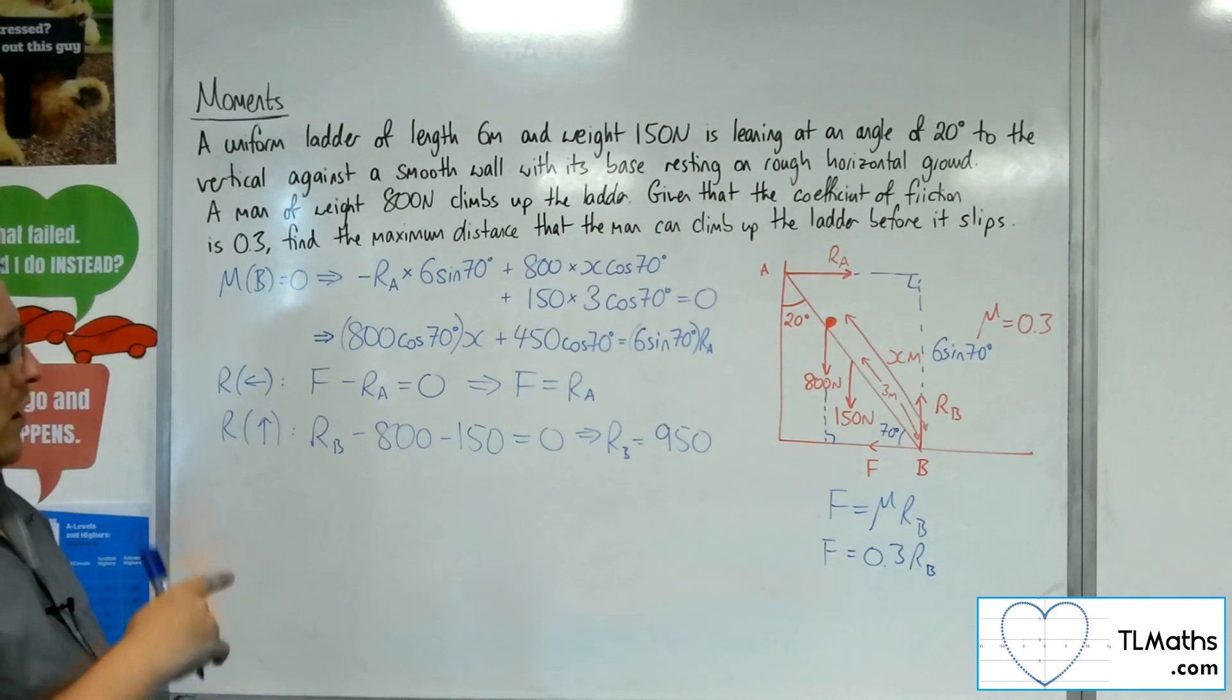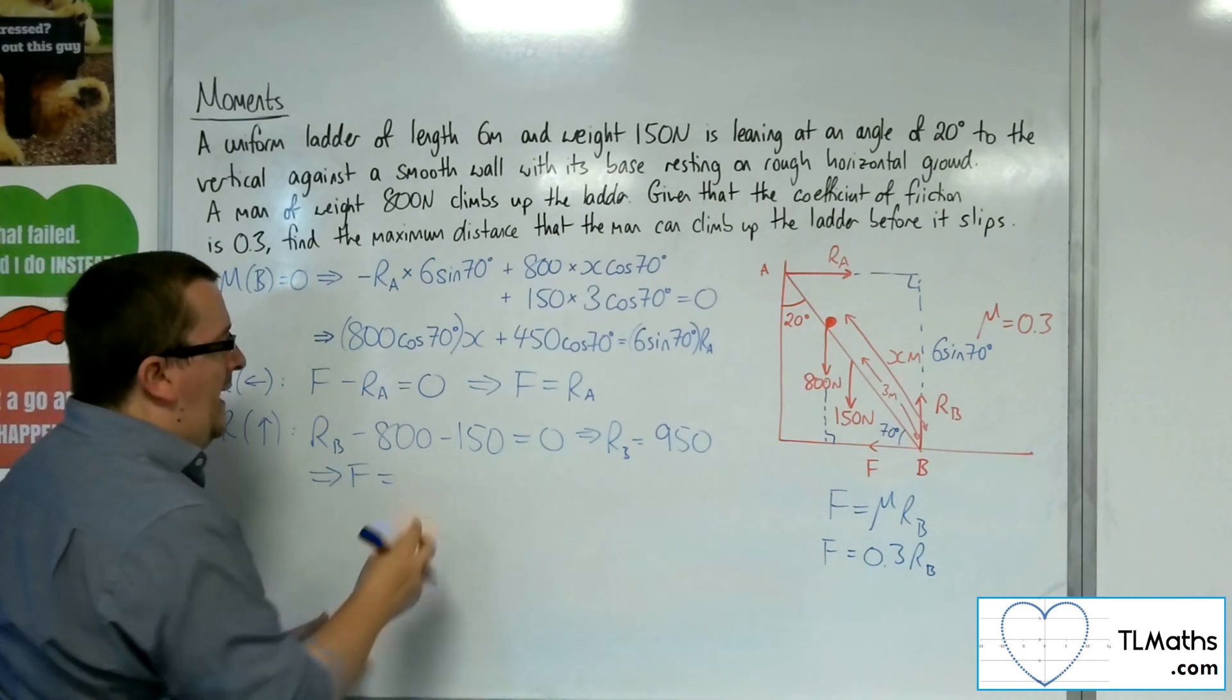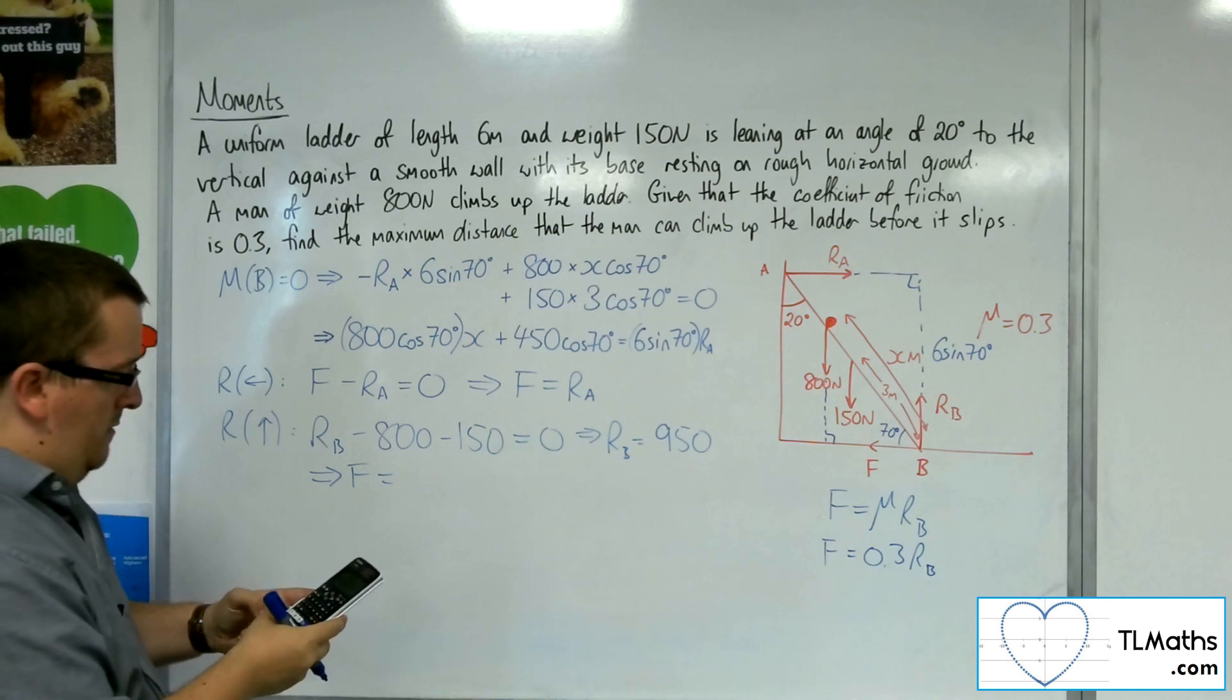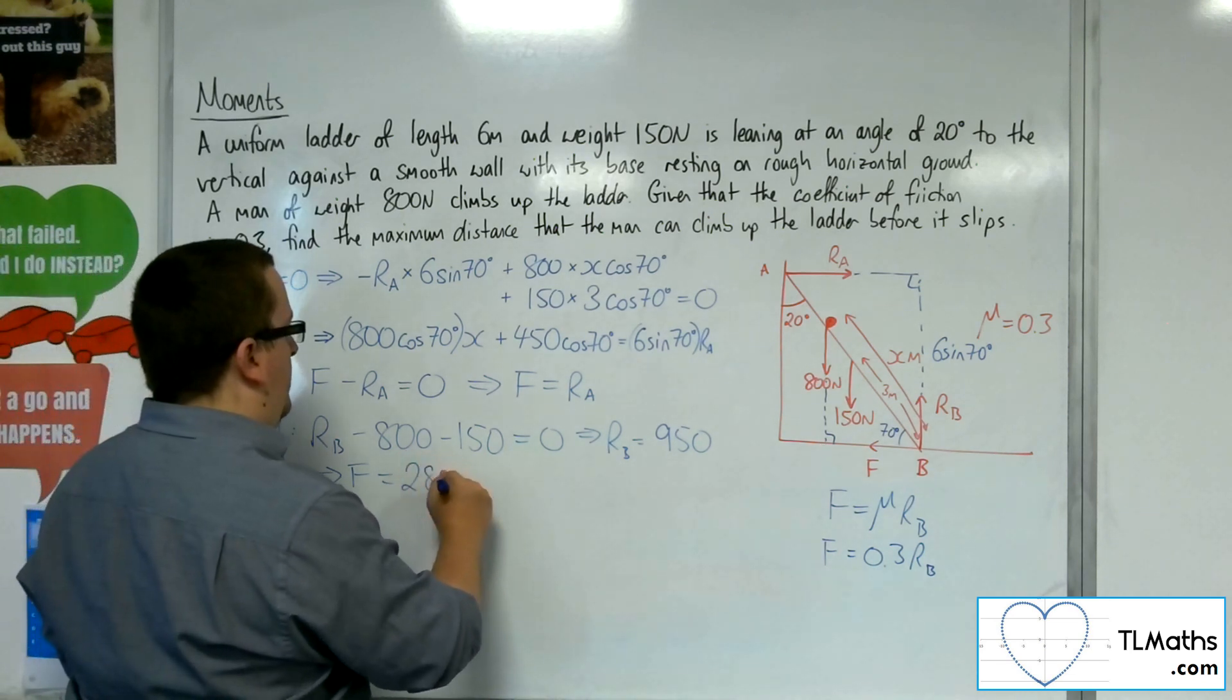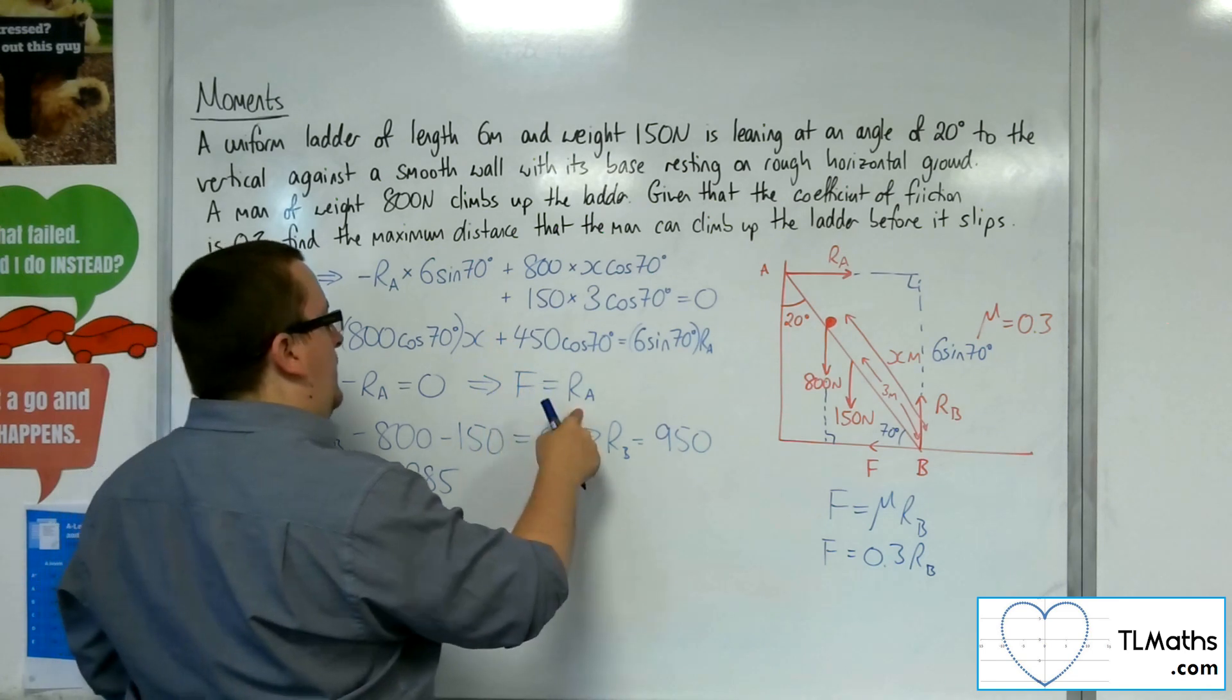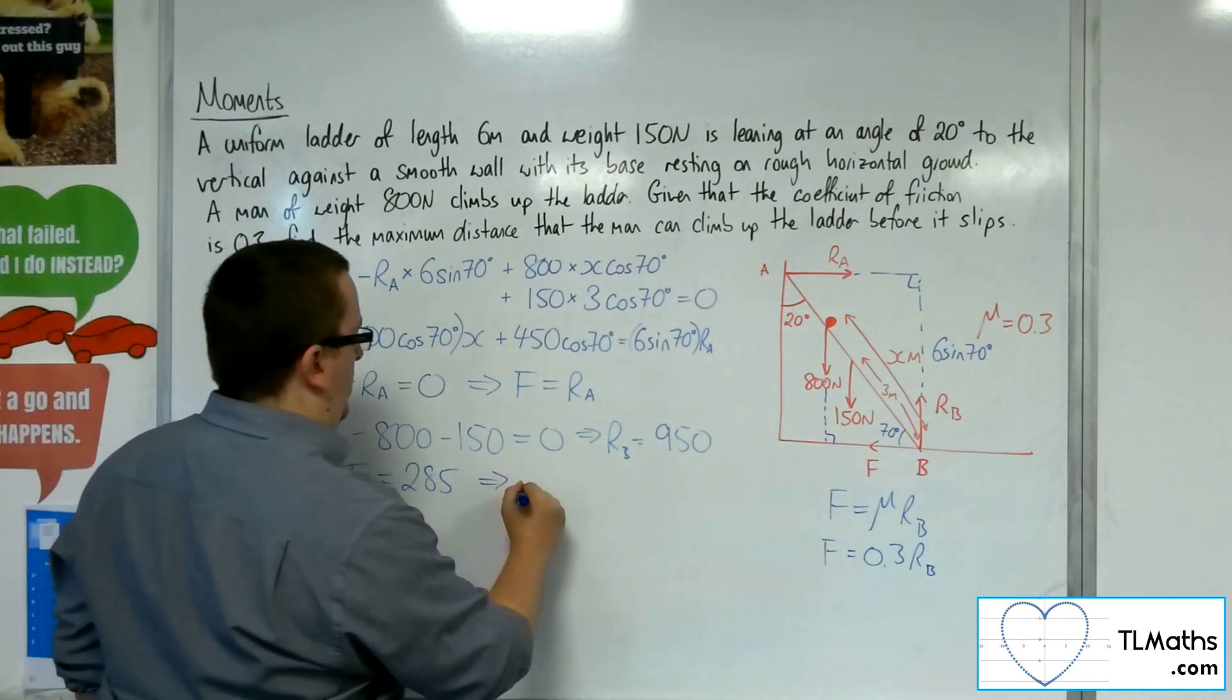Right. So I've got RB, which means that F is 0.3 times the 950, which is 285. And that is the same as RA. So now I've got the RA that's there as well.